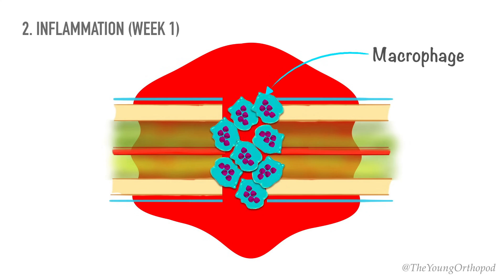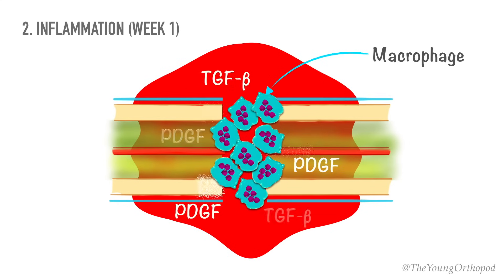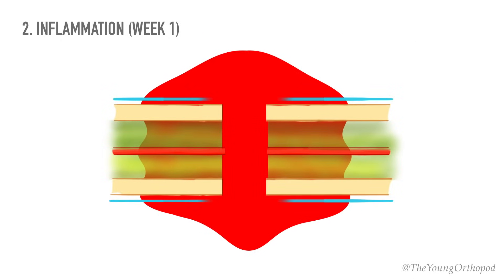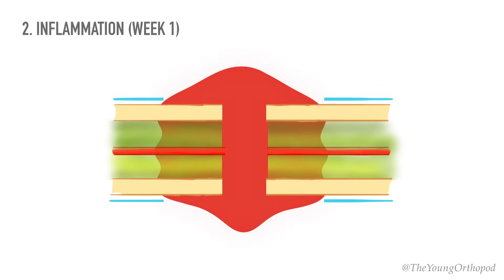Various inflammatory mediators come into play, which include cytokines, transforming growth factor beta, and platelet-derived growth factor. Later on, the clotted hematoma is slowly absorbed and fine new capillaries grow into the area.